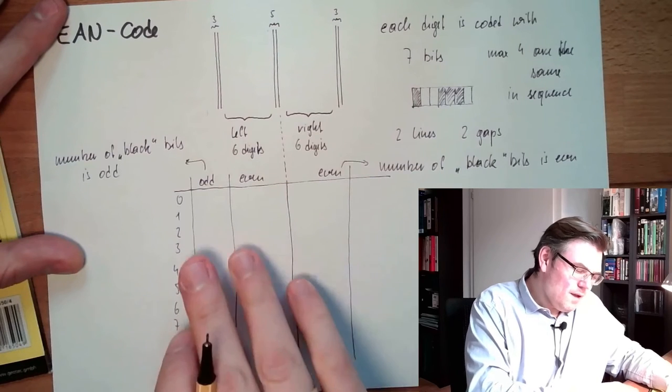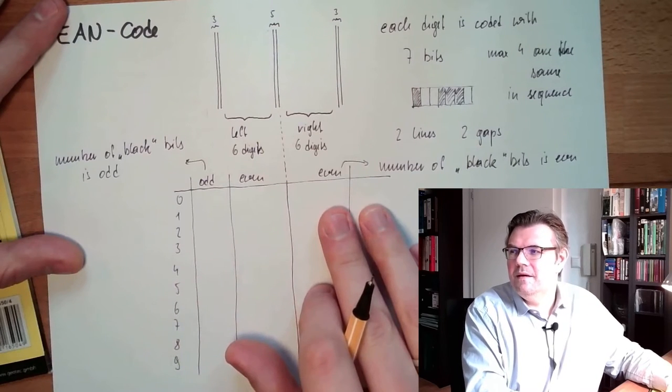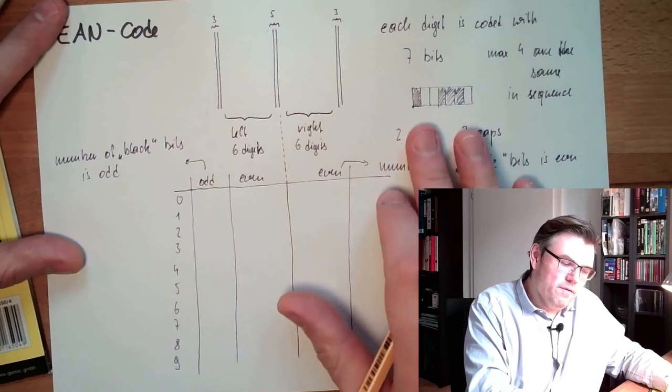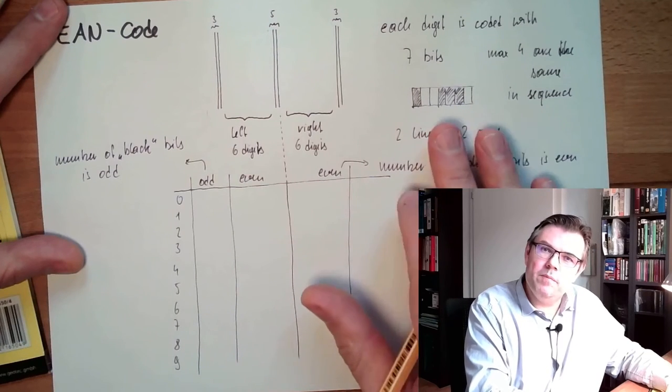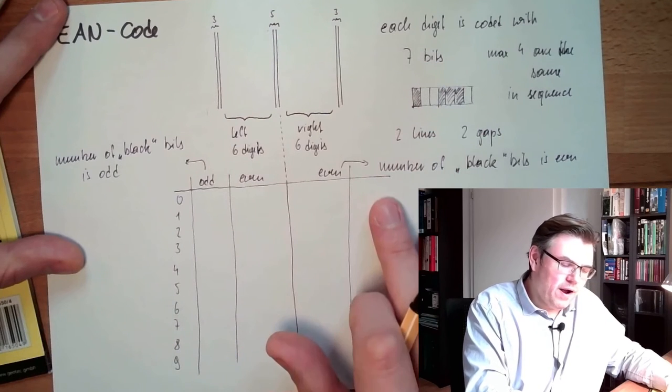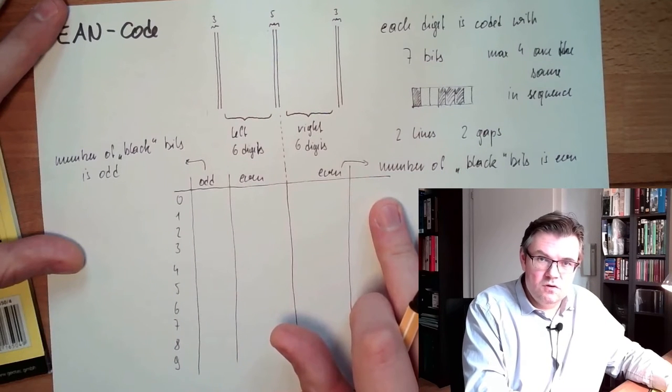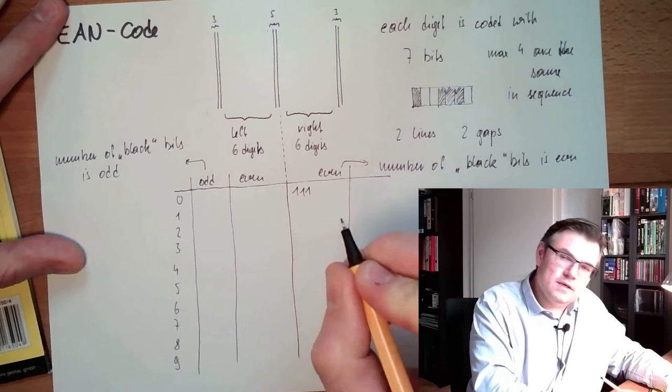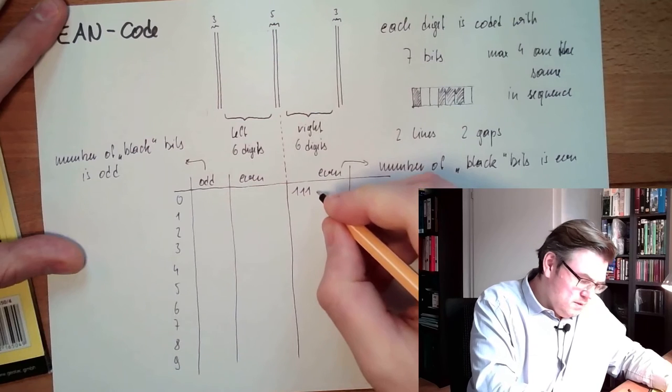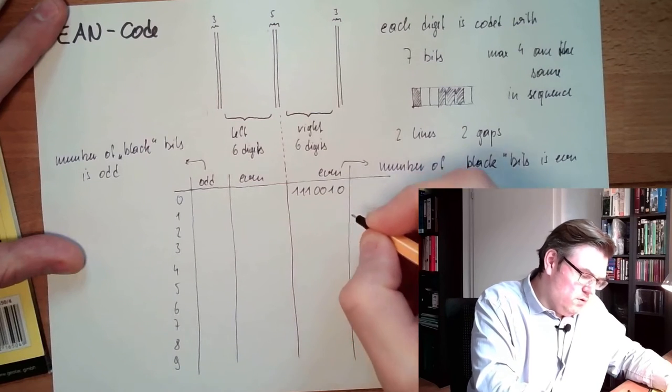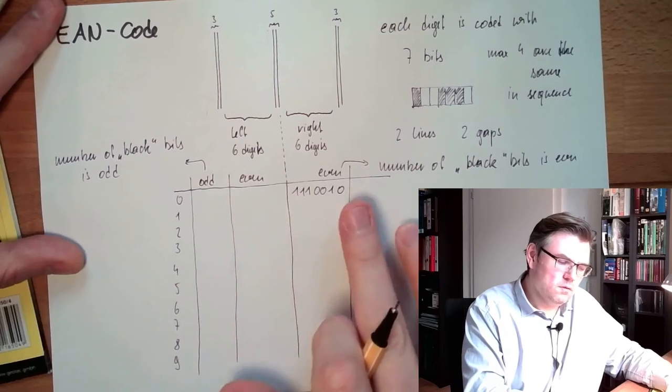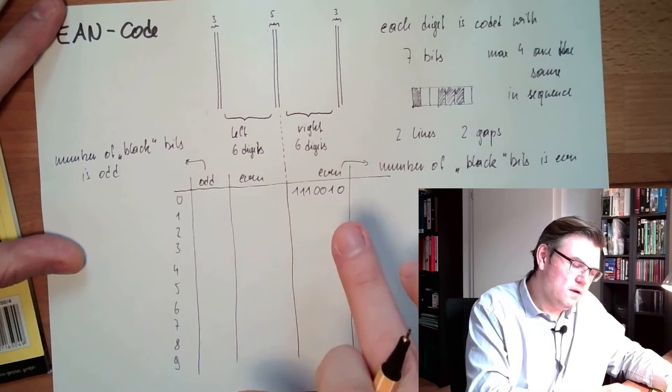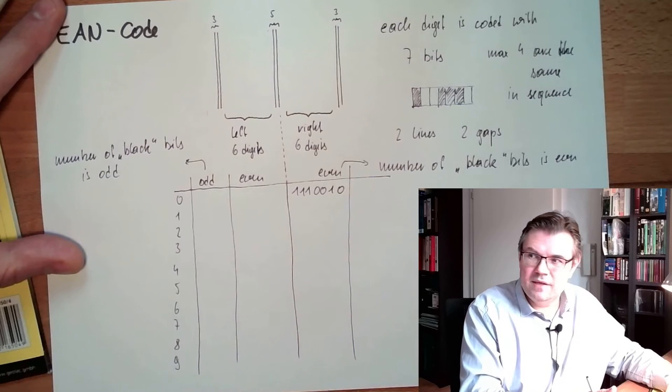So, on the right hand side, there are only even combinations, only with four bits. The even combination on the right hand side for zero, now I have to look up in the table, is one, one, one, zero, zero, one, zero. One, one, one, three black, two white, one black, one white. This would be on the right hand side.